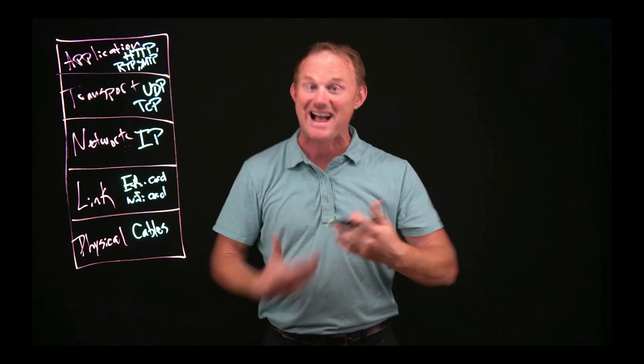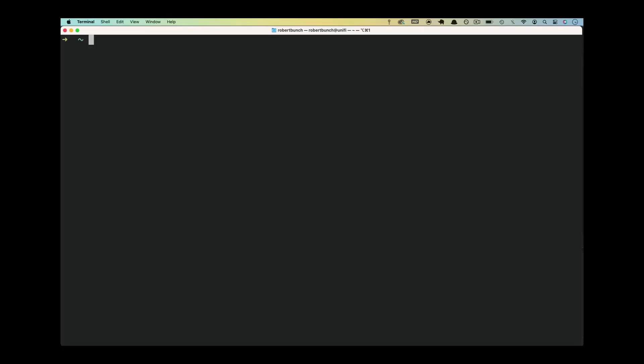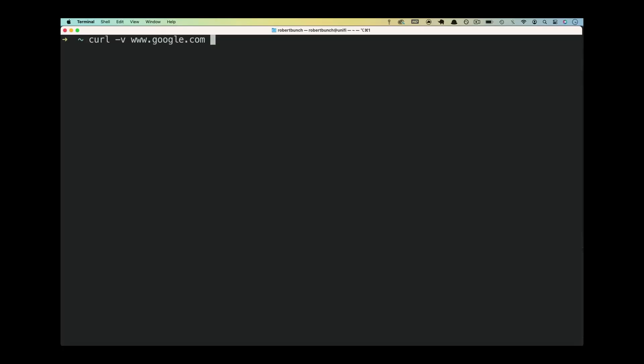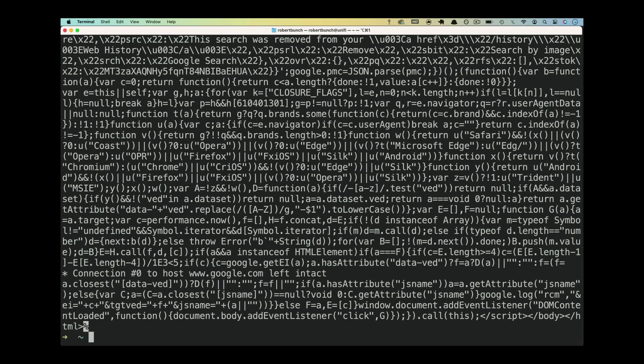What's inside of each of these layers? How do the packets and the layers actually work? I pulled up on the screen here a curl request that I have made to Google so that you can see what an HTTP request looks like.